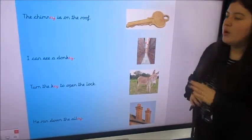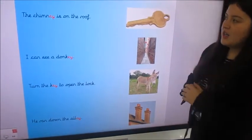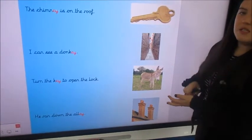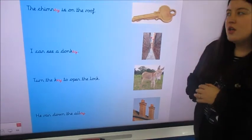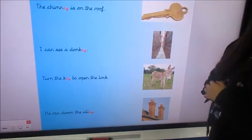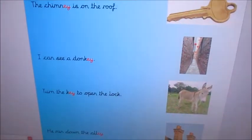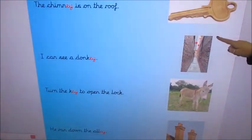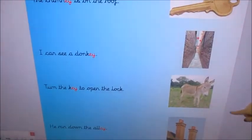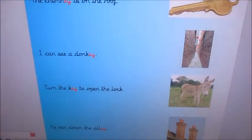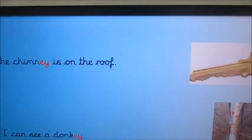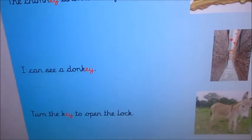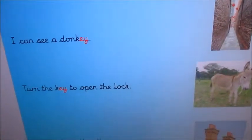So you need to pause the video in a moment, and you need to draw the pictures and write the sentences on your whiteboard just as you can see them on here. Okay, so have a real good look. We've got a picture of a key, a picture of an alley, a picture of a donkey, a picture of a chimney, and we've got four sentences. So you need to write those four sentences down and draw those four pictures as best as you can.